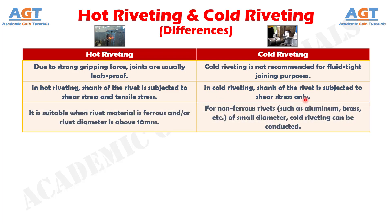Difference number 8: hot riveting is suitable when the rivet material is ferrous and/or the rivet diameter is above 10 mm. For non-ferrous rivets such as aluminum, brass, etc. of small diameter, cold riveting can be conducted.